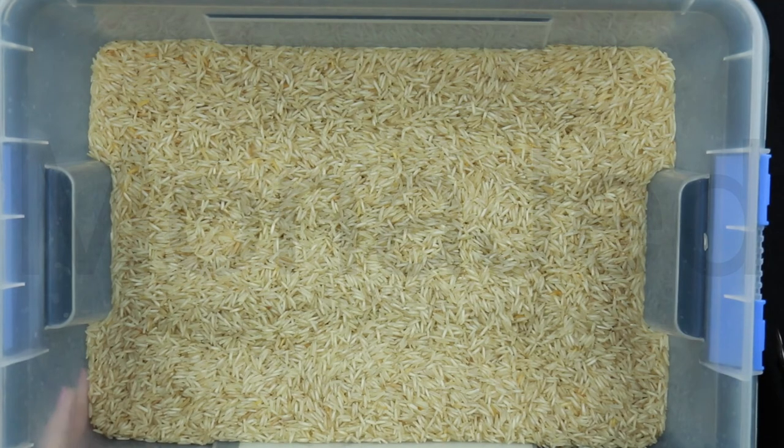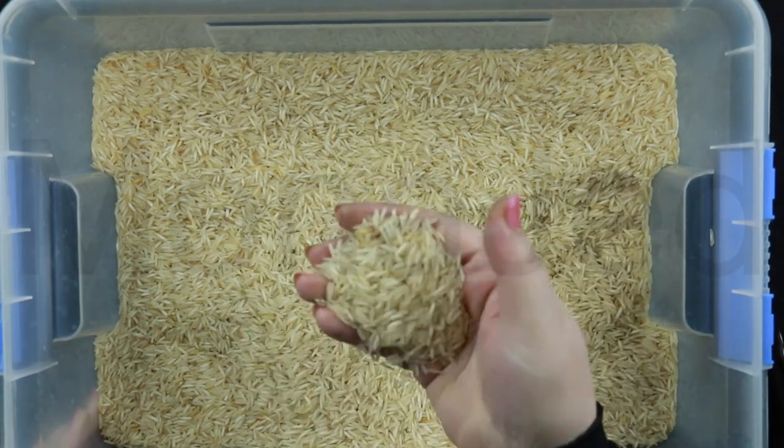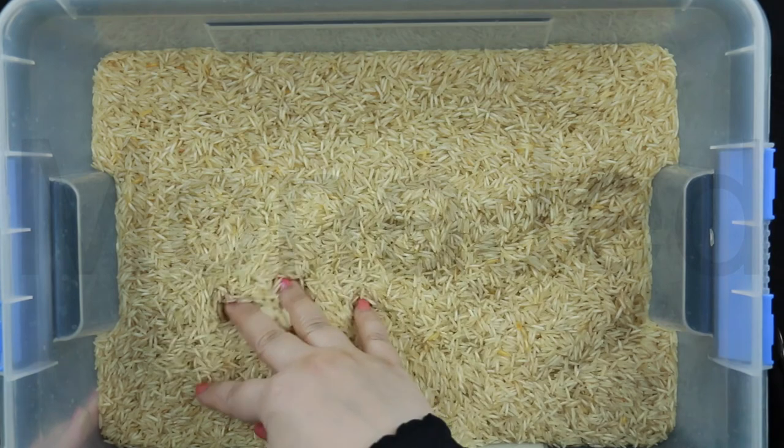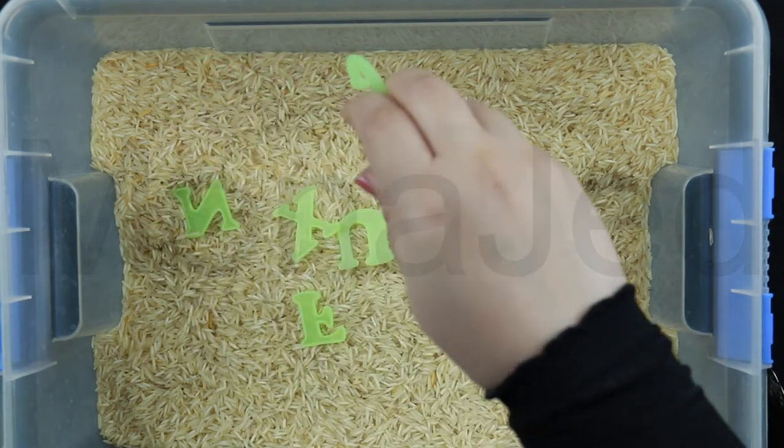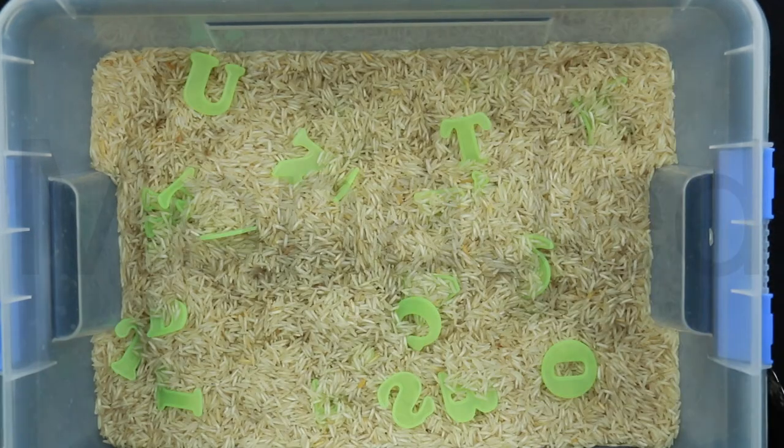So now in this, you fill it with whatever abundant thing you have. I have rice. So the alphabets, just put in the alphabets. Now you can do the sensory play.